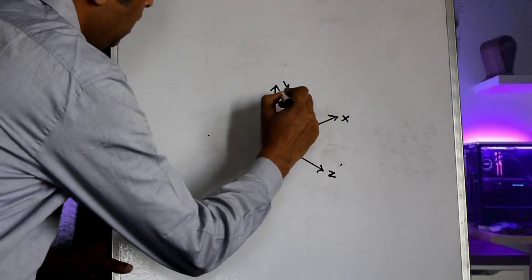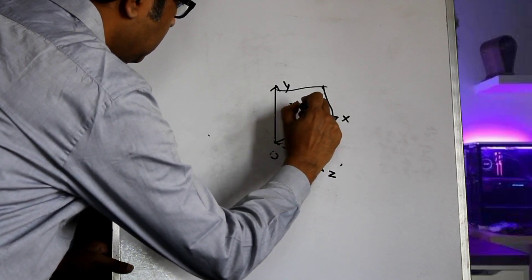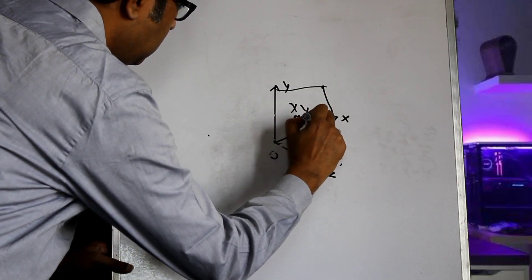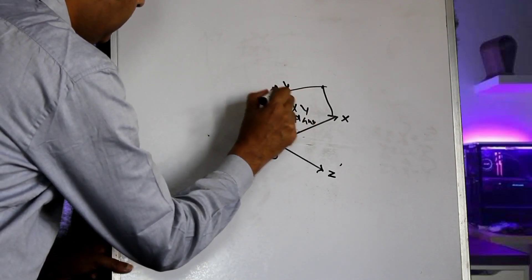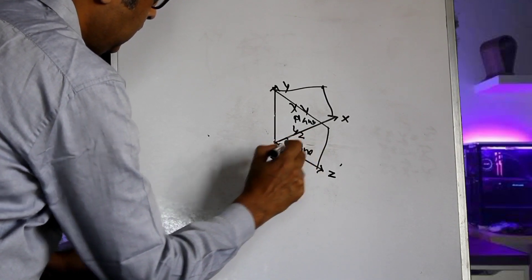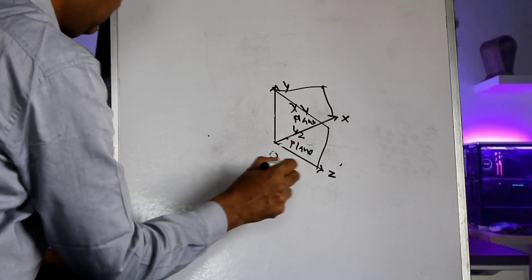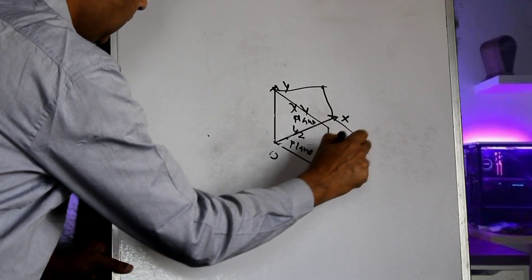XY plane would be defined like this. YZ would be defined like this. And ZX plane would be defined like this.